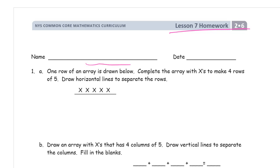And we have one row of an array is drawn below. Complete the array with X's to make four rows of five. So there's one row of five already and we need four rows of five.